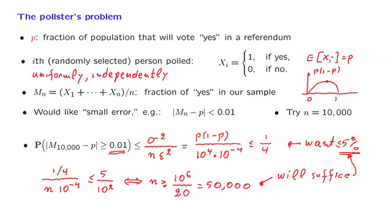And then there's another effect. Our calculation here was based on this inequality, which is the Chebyshev inequality. But the Chebyshev inequality is not that accurate. It turns out that if we use more accurate estimates of this probability, we will find that actually much smaller values of n will be enough for our purposes.